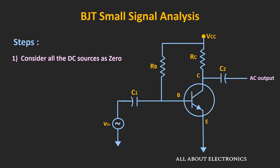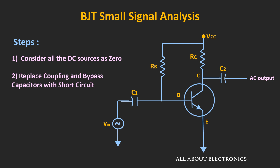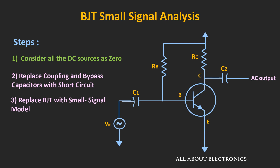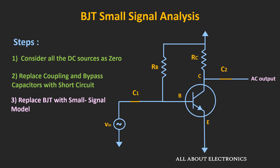The second step is to replace all the coupling and bypass capacitors with short circuits. The third step is to replace the BJT with the small signal model. So following all these steps: the DC voltage source Vcc acts as a short circuit and gets connected directly to ground, and capacitors C1 and C2 are replaced by short circuits.